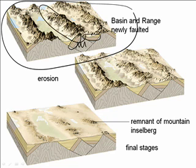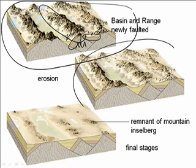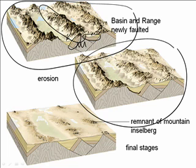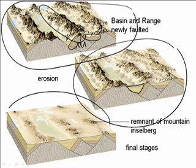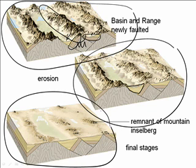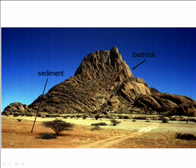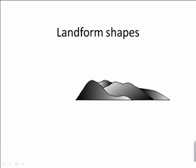Meanwhile, the mountain ranges are busy eroding away, and that sediment fills in the basins. In the second diagram, the basins are simply filling up deeper and deeper with the sediment of the eroding bedrock. Finally, in the last diagram, there's nothing left of the mountain ranges. The only thing left might be a small remnant of bedrock surrounded by sediment — that's referred to as an inselberg. In this picture, you can see the bedrock surrounded by sediment: an inselberg.